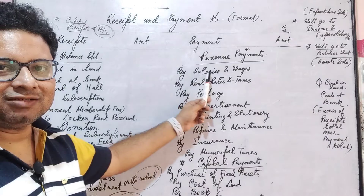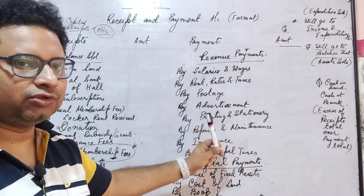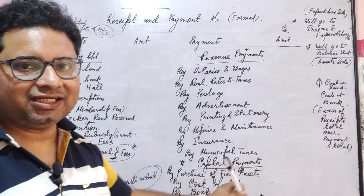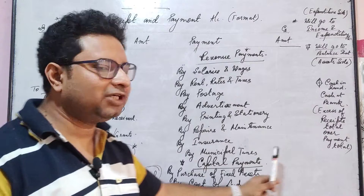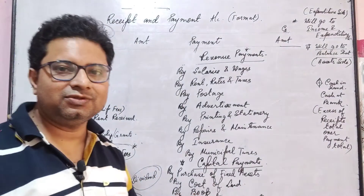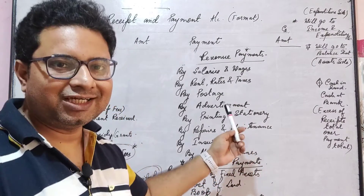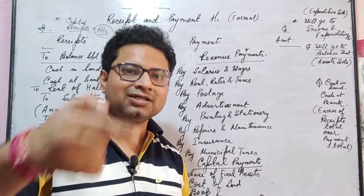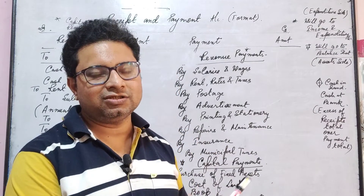Revenue payments include: salaries and wages, rent, rates and taxes, postage, advertisement, printing and stationery, repairs and maintenance. In addition, insurance and municipal taxes — all these payments are considered revenue payments. These are recurring in nature, occurring every year, every month.